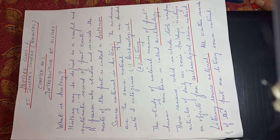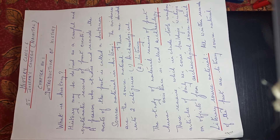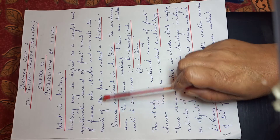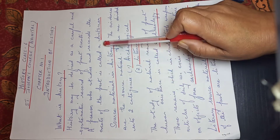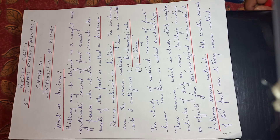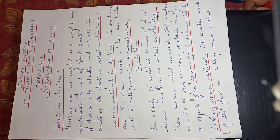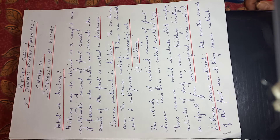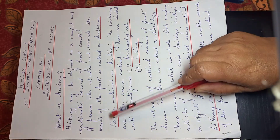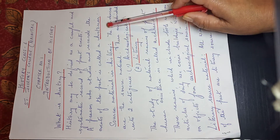Just as you have your family album and in that you see all the past events, in the same way history also tells us about the past events. A person who studies and records the events of the past is called a historian. So these are two very important points: what is history, and who is a historian.